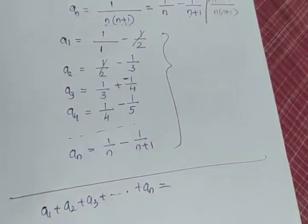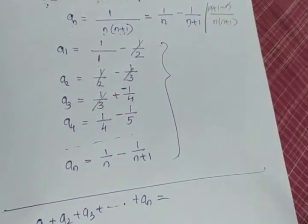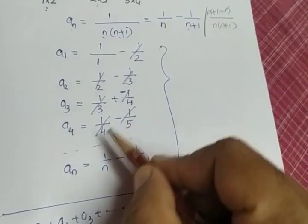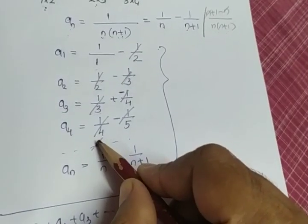So minus 1 by 2 and plus 1 by 2 gets cancelled. Minus 1 by 3 and plus 1 by 3 gets cancelled. Minus 1 by 4 and 1 by 4 gets cancelled. Minus 1 by 5 and the next term 1 by 5 will be... Next term of the next term, that means the fifth term,